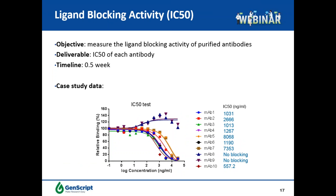For most targets with known ligands or receptors, functional clones usually have the feature of ligand blocking activity. Therefore, ligand blocking activity characterization is often performed for hybridoma supernatants during screening, and for purified antibodies or final clones. In this example, 10 MAbs were tested for their ligand blocking activity and showed varying blocking activities. MAb8 and MAb9 could not block the binding of ligand to the target protein at all. Antibodies with strong ligand blocking activity, such as MAb10 and MAb3, can be selected for further characterization.